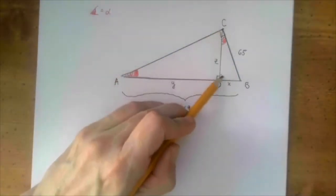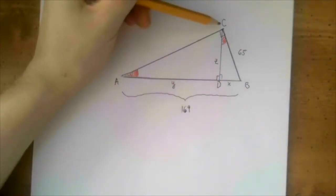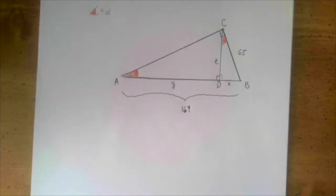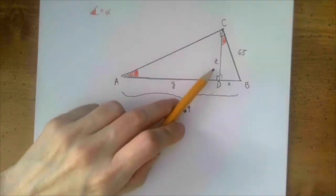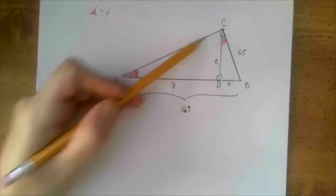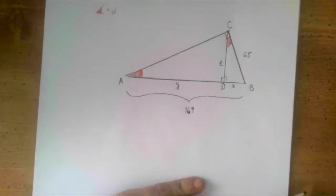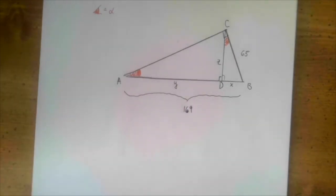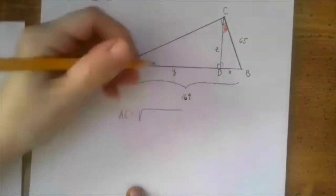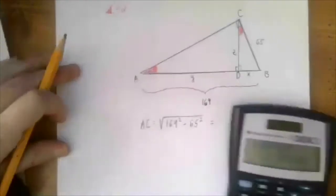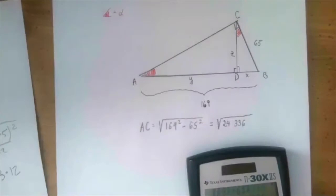There are three triangles: the original ABC, the small triangle CDB, and the bigger triangle CAD. They are similar and therefore their sides are proportional, but they're all twisted and turned, so it's difficult to tell what side belongs to what. For example, the line segment labeled z is the shortest side in triangle ADC but the second shortest side in triangle BDC. So even though it's z and z, they're not corresponding to each other.